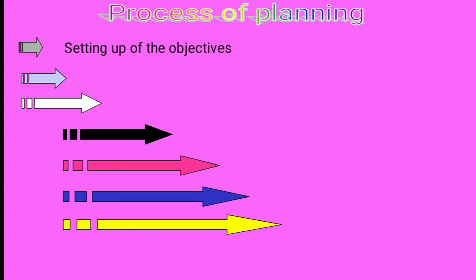The first step in the process of planning is setting up the objectives. In this step, the planning manager sets up the objectives for the organization. He begins with setting up the objective because all the policies, procedures, and methods are framed for achieving these objectives only.